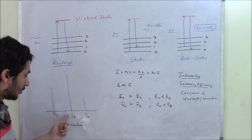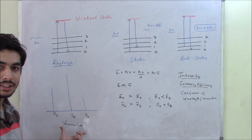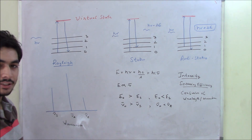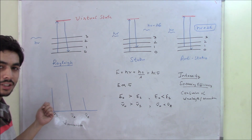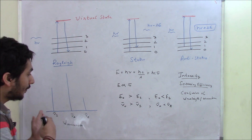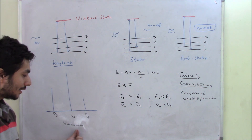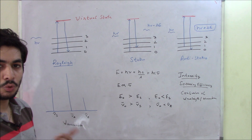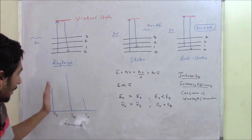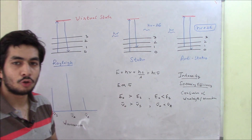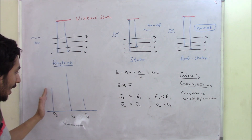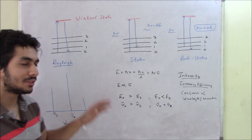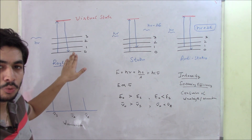This is the diagram you generally see. On the x-axis we have wave number and on the y-axis we have intensity. Rayleigh scattering is the most intense. The Stokes line is towards the left, and the Anti-Stokes line is towards the right when represented in terms of wave number. You should be careful what is being represented on the x-axis.